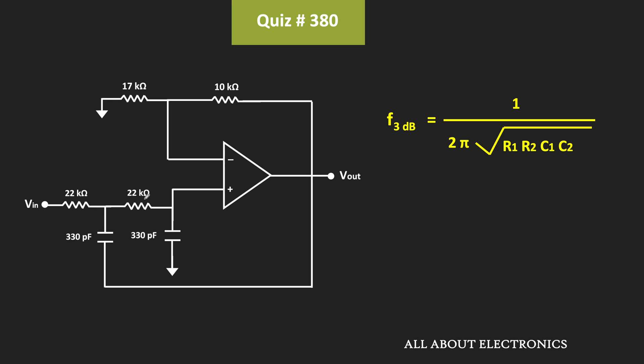This 3dB frequency can be given by this expression, where these are R1 and R2, and these two capacitors are C1 and C2. Here, R1 equals R2 and C1 equals C2. If we put the values of these resistors and capacitors and find this 3dB frequency, it comes out as 21.9 kilohertz.